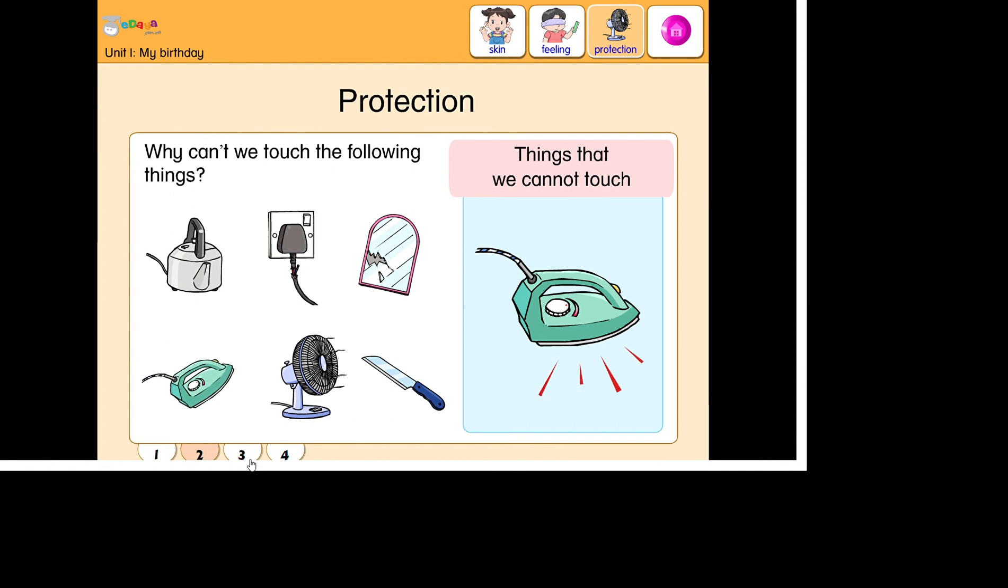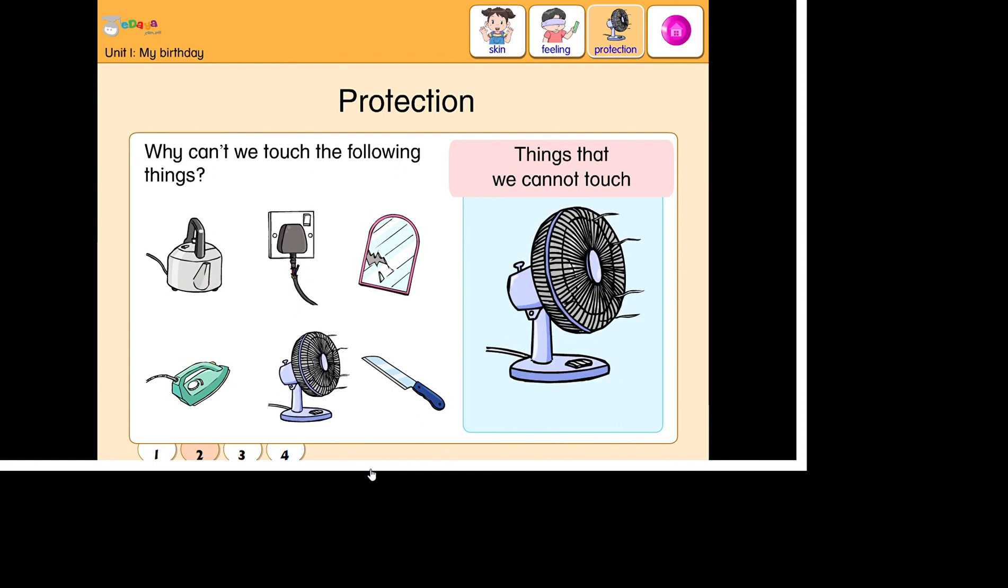This is an iron. An iron is used to iron the clothes. Be careful because it's hot. This is an electric fan. It can also be dangerous if you put your finger through the blade.